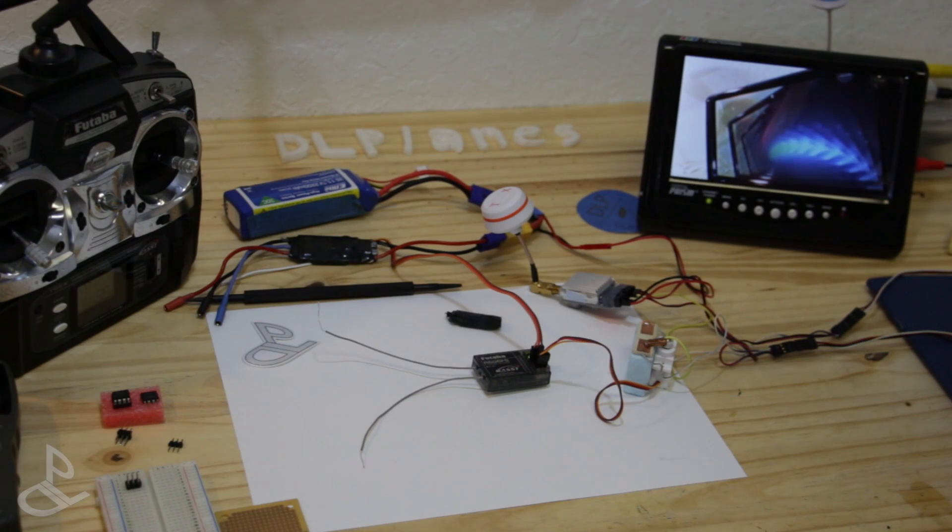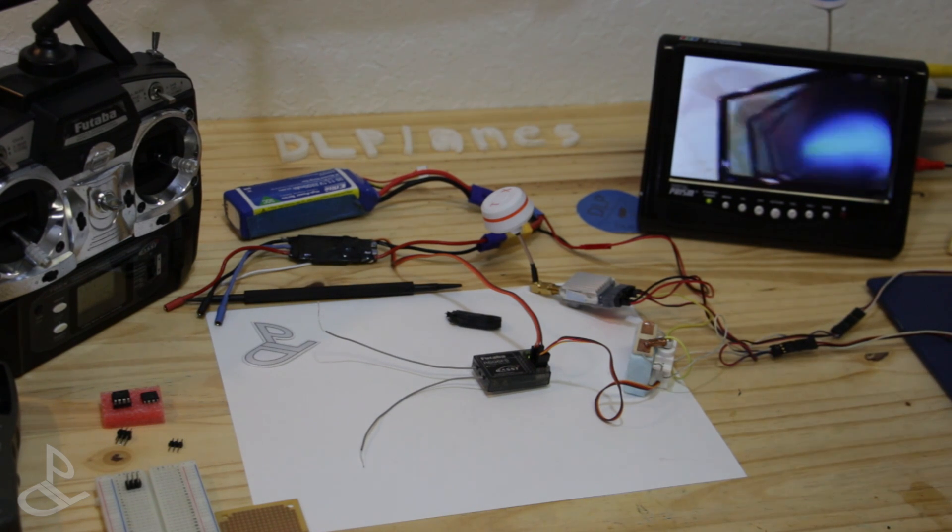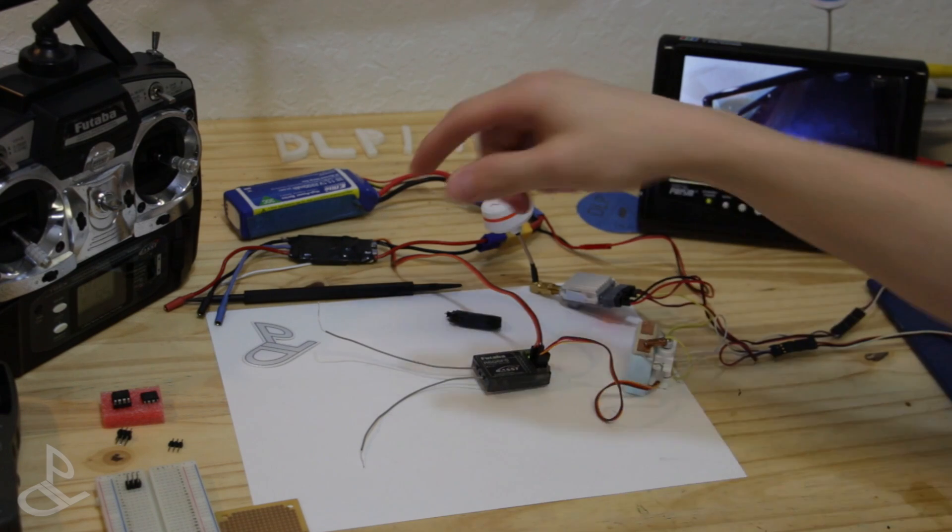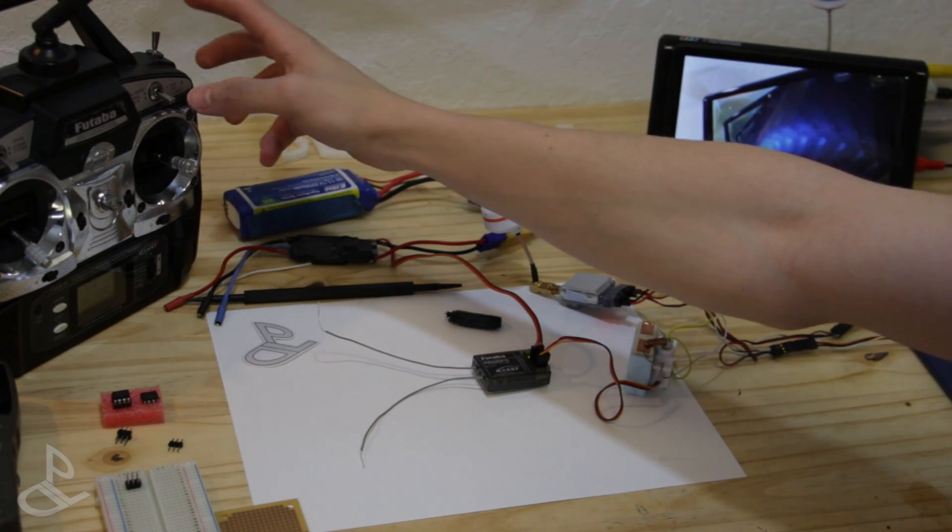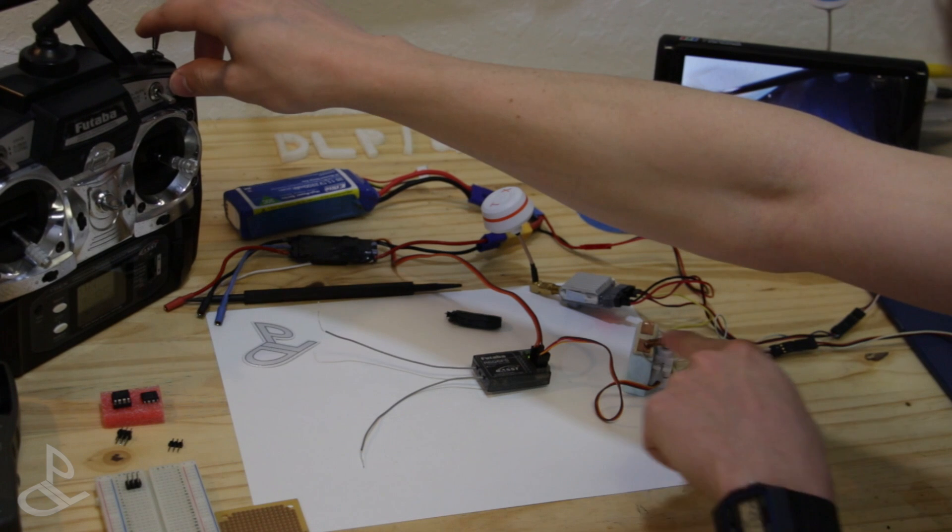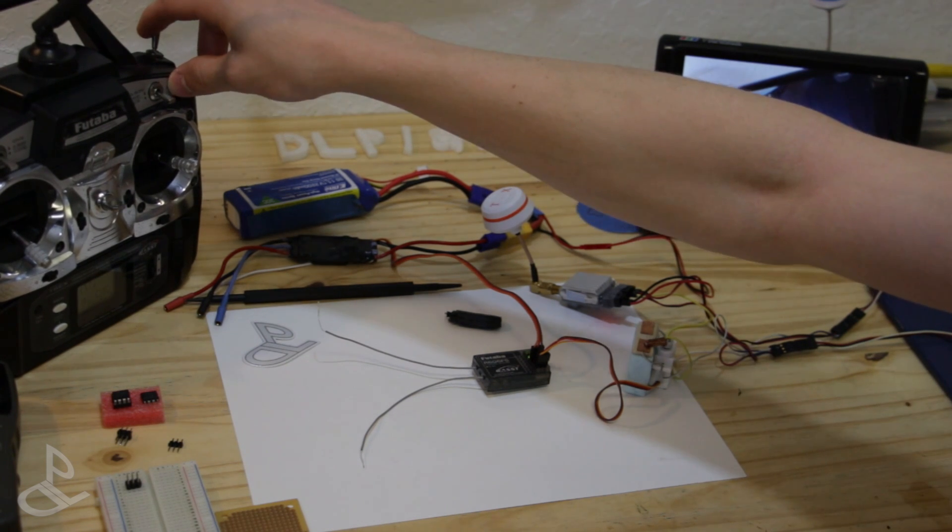Alright, so I took off the setup from the airplane and the quadcopter so you guys can see it more visually. So, I have one camera here pointing towards the TV and I have another camera pointing towards the airplane. I am going to hit channel 6 on my transmitter and the servo should move and change the video signal.